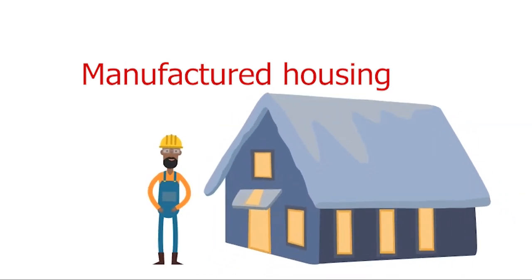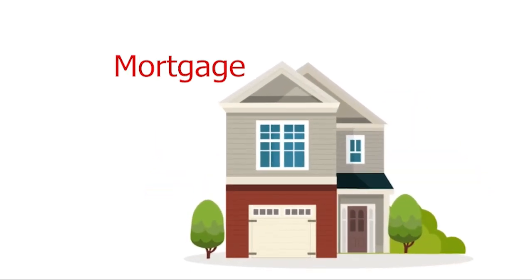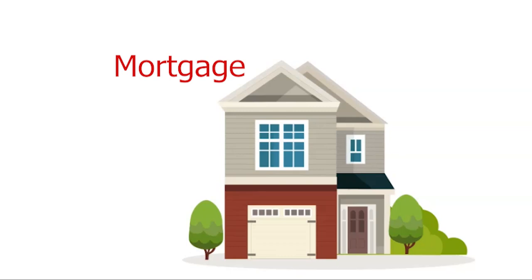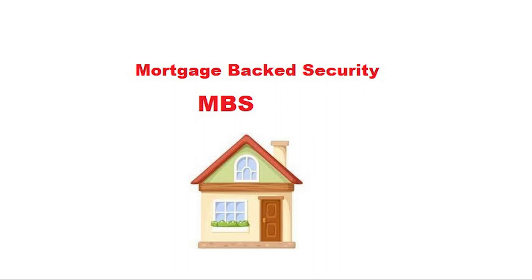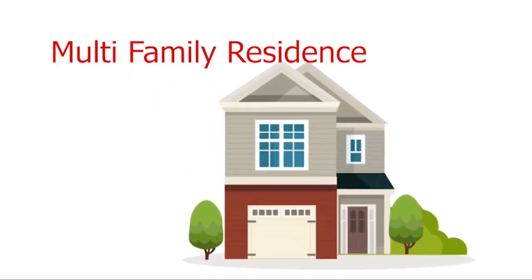Manufactured Housing: a form of building that is fabricated at another location and transported to its permanent location. Mortgage: a legal agreement that gives the lender the right to take over your building if you fail to repay your loan plus interest. Mortgage-Backed Security, MBS: an investment package similar to bonds, where groups of home loans and real estate loans are pooled together and sold to investors, who receive periodic payments similar to bond coupon payments. Multifamily Residence: any kind of residential property with more than one individual housing unit — it can be a duplex, triplex, quadplex, or more.